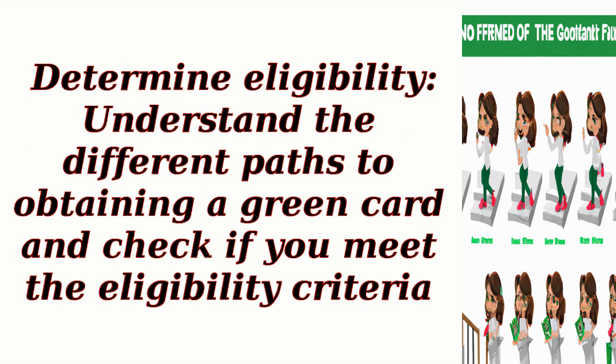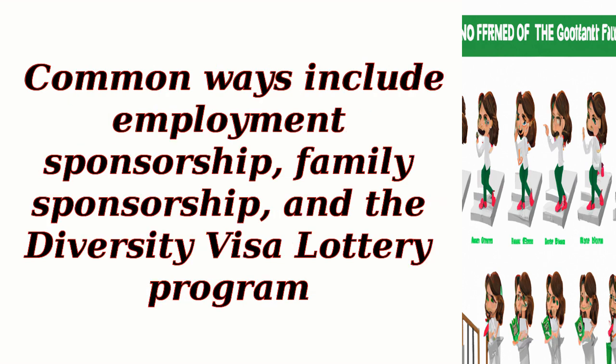Step 1: Determine eligibility. Understand the different paths to obtaining a green card and check if you meet the eligibility criteria. Common ways include employment sponsorship, family sponsorship, and the diversity visa lottery program.